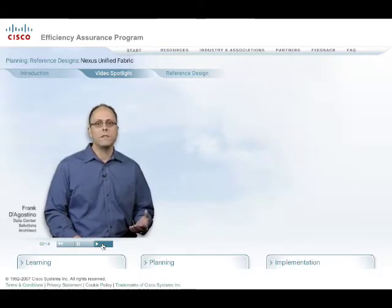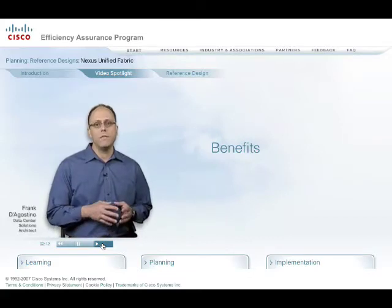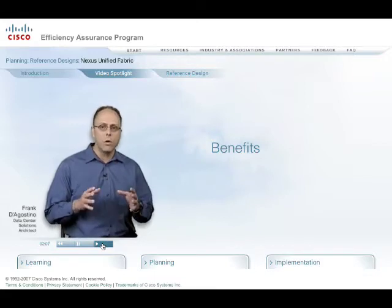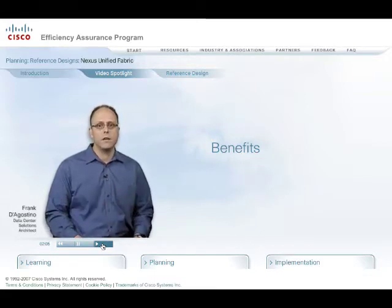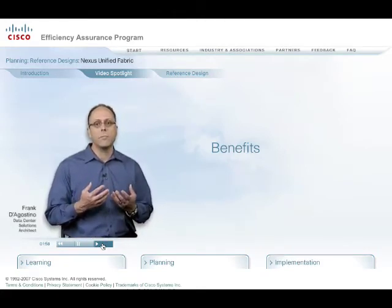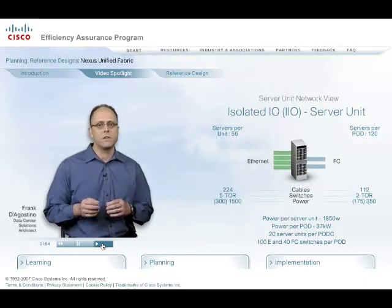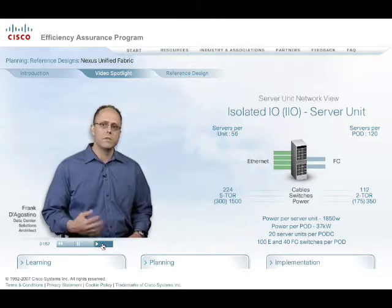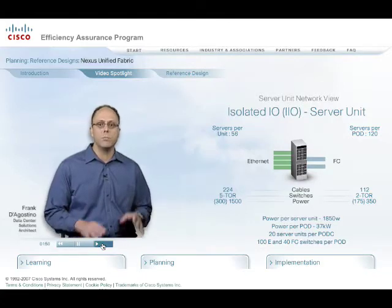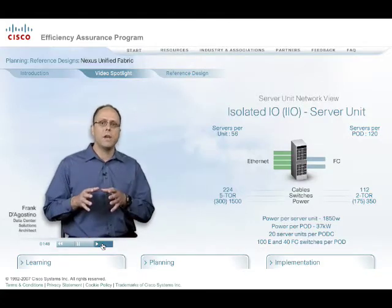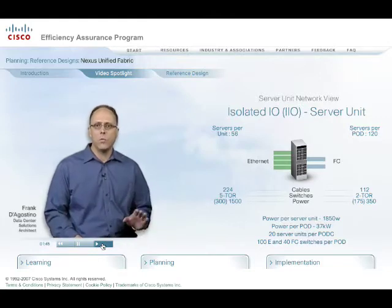The benefits derived from implementing unified fabrics with the Nexus family include an immediate efficiency gain in reducing the total cable count in the data center, which may hinder air distribution assuming a raised floor installation. In terms of unified fabrics' impact on the server domain, there is an efficiency gain potential in reducing connections to the server. A typical virtualized server configuration requires multiple NICs and HBAs that will consume 20 to 35 watts while utilizing six to eight connections on average.